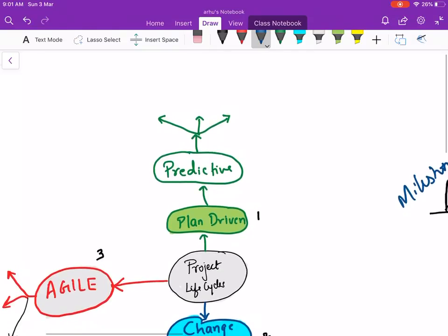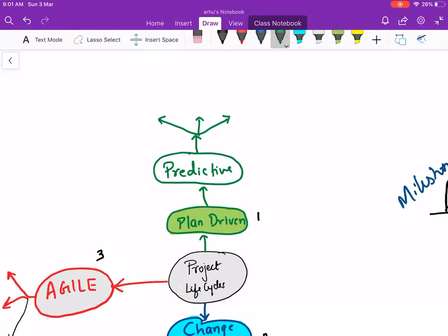Now in a predictive life cycle what are the three constraints which are very clear? This is time also known as schedule, cost, and scope. So your scope drives the other two constraints time and cost. So if your scope is clear you go for predictive plan driven, maybe do a project in a waterfall model sequentially.